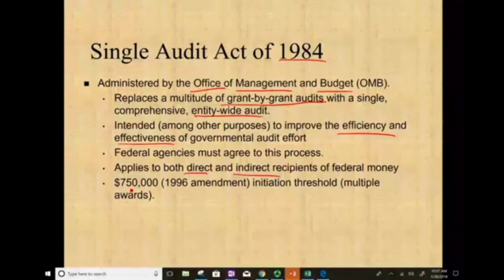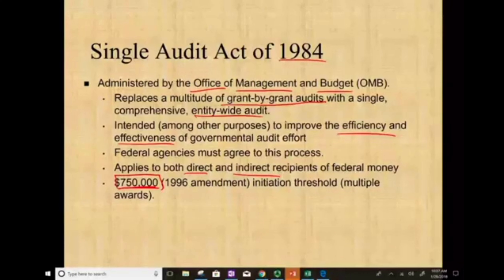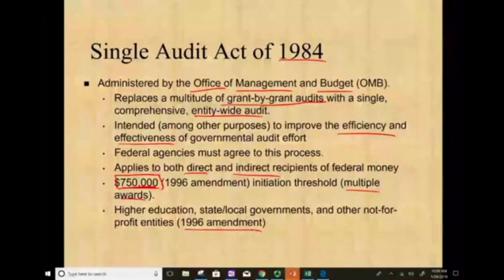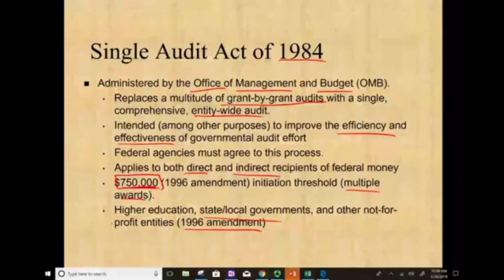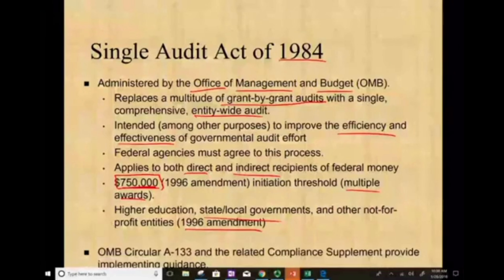In 1996, the $750,000 threshold was established. We'll talk more about this amount — it changes from year to year. In 1996, higher education, state and local government, as well as not-for-profit entities were now included under the single audit. Before, higher education and not-for-profit were not included — only state and local government. Now they are all included under the single audit.